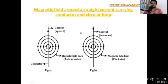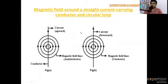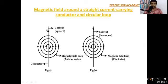The first topic in this video is the magnetic field around a straight current-carrying conductor and circular loop. Look here — this is the straight current-carrying wire. It is a conductor. Here, the current is passing through from downward to upward, and here the current is passing from upward to downward.